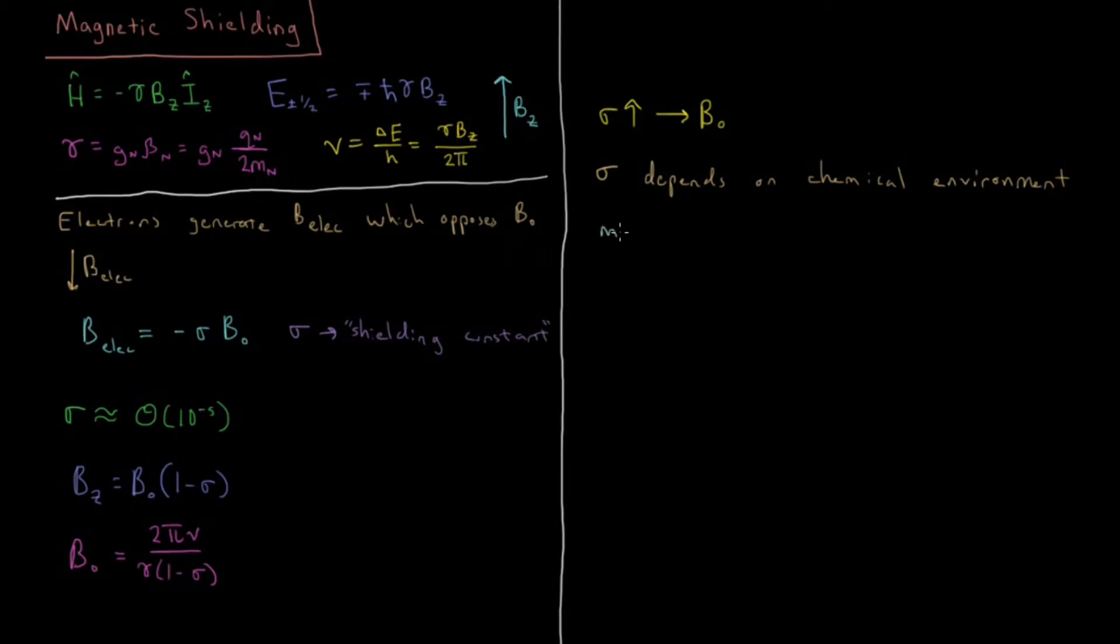What we see here is that the more electron withdrawing the local environment or whatever substituents are attached or nearby to our nucleus, more electron withdrawing substituents in the local environment is going to make sigma go down. There's more shielding when there's more electron density present. So if you had a bunch of electron donating substituents nearby, you would have a higher sigma and more shielding. But electron withdrawal will decrease the amount of electron density nearby and decrease the shielding.